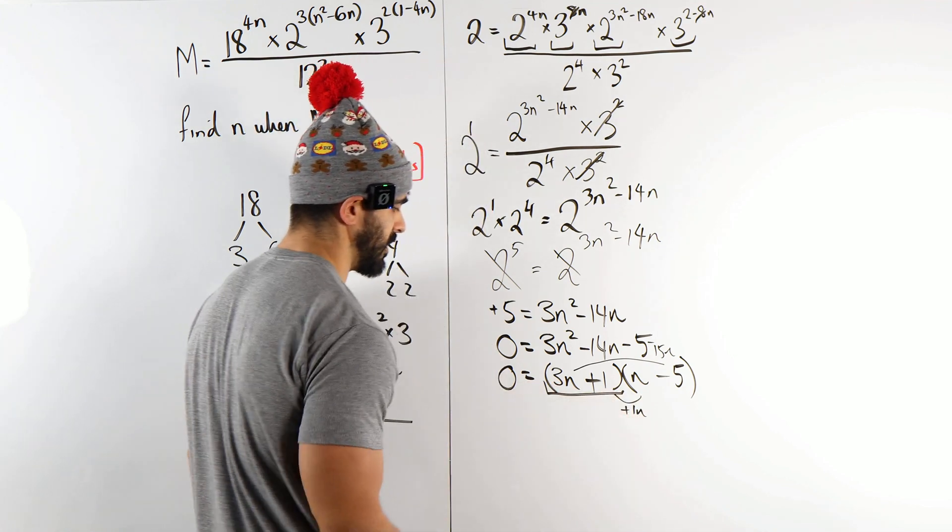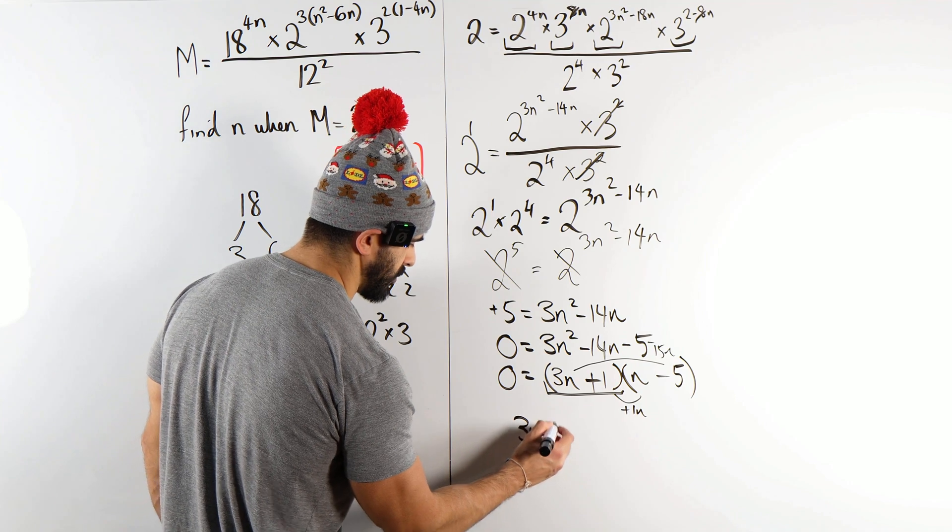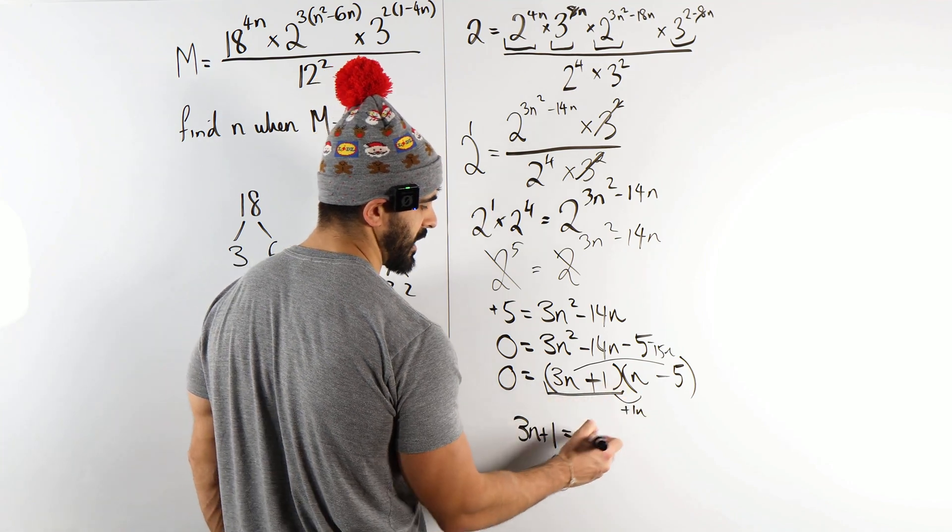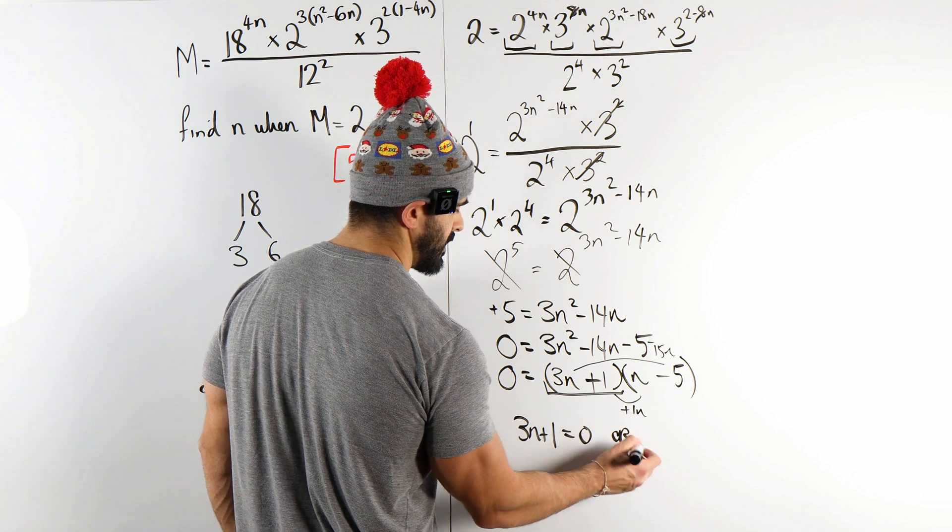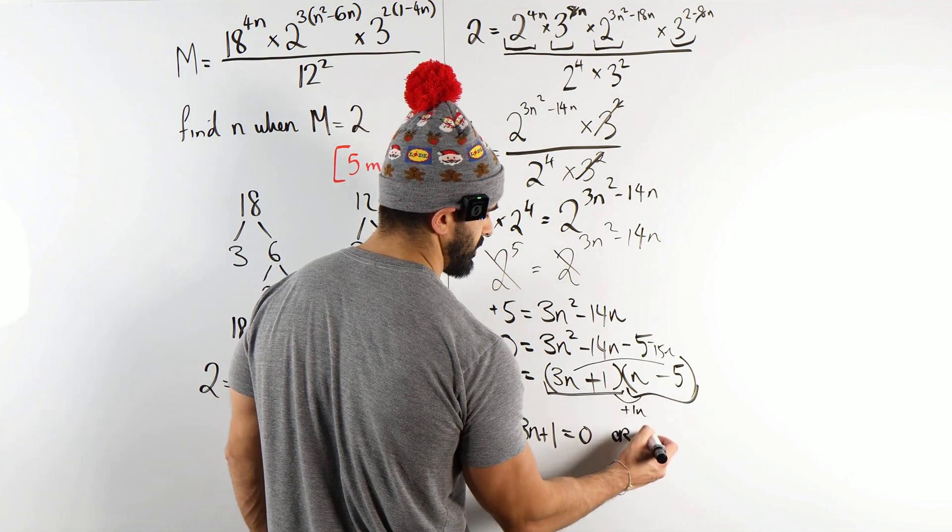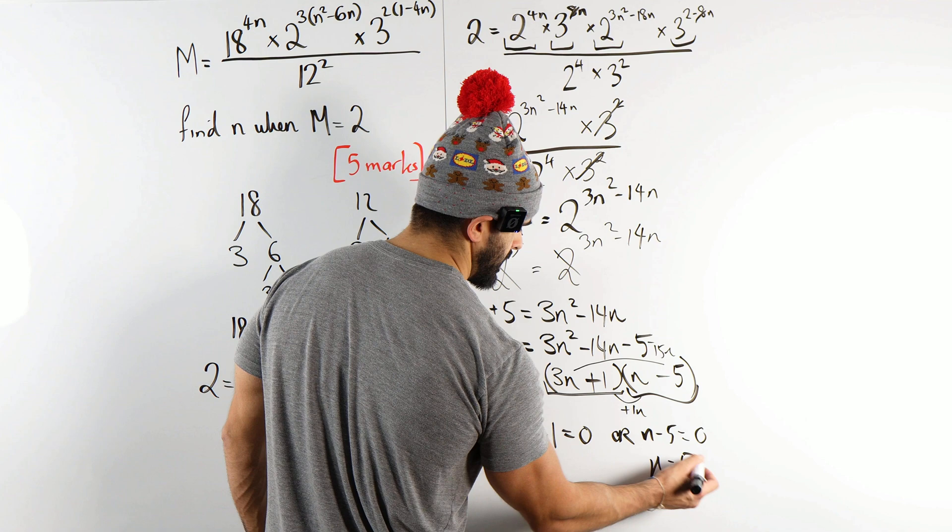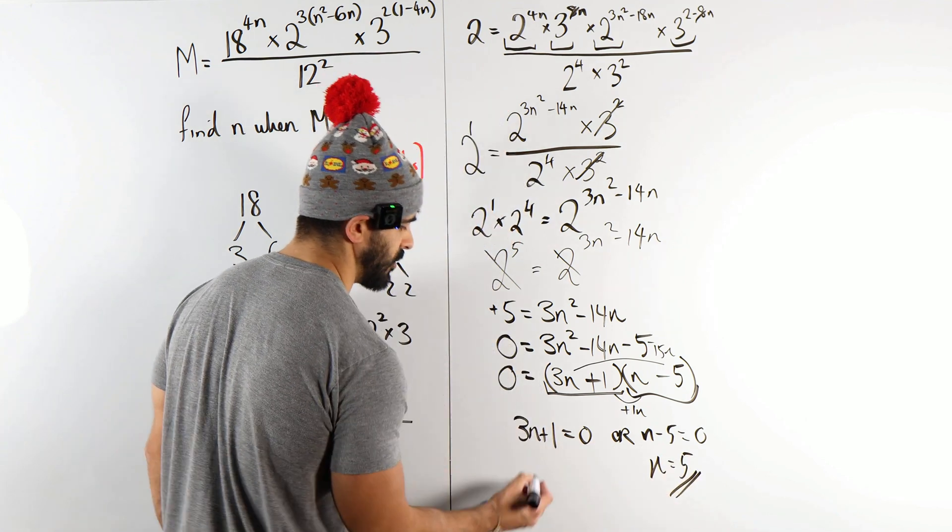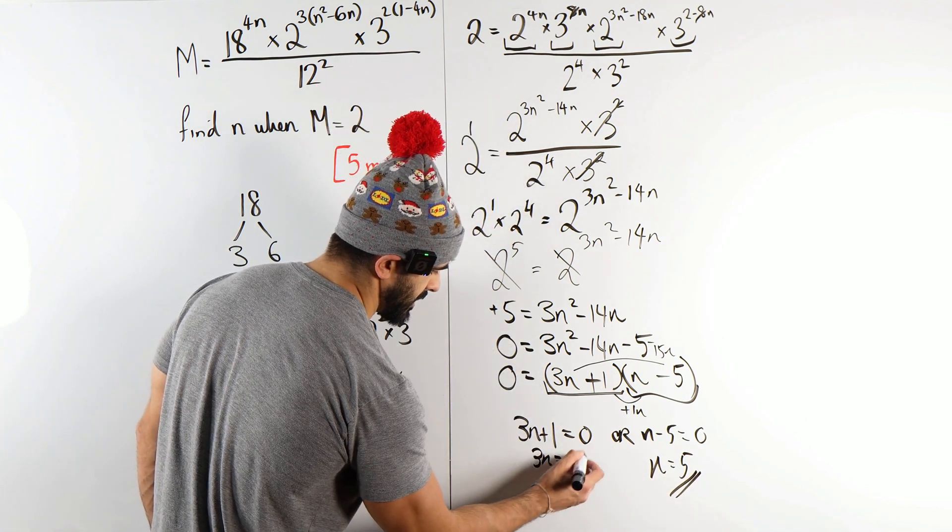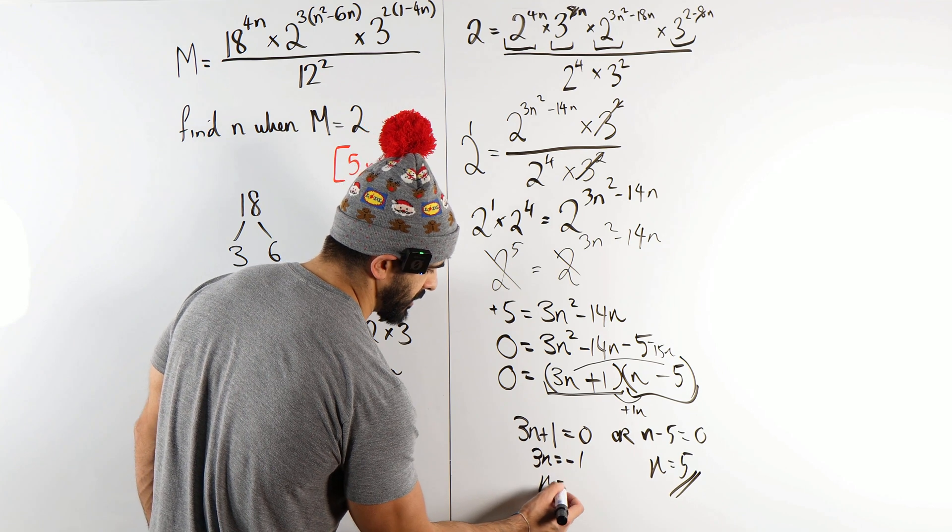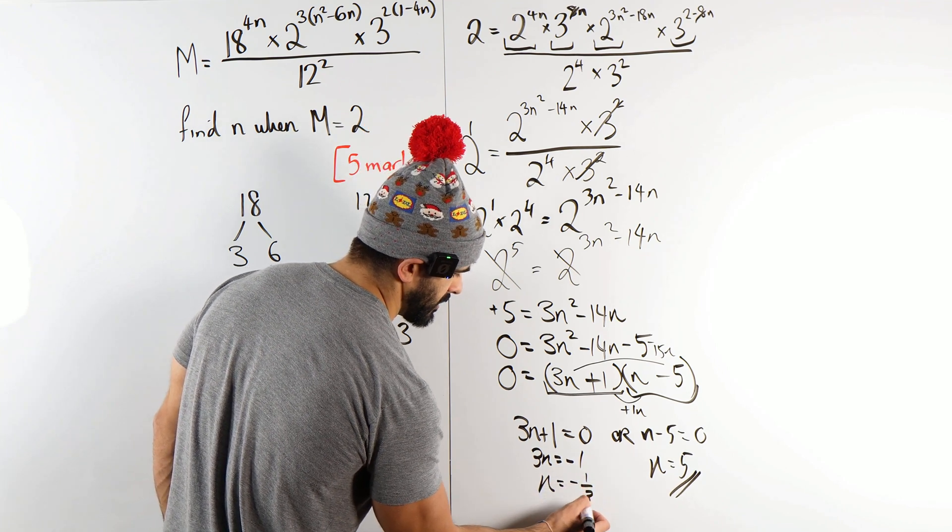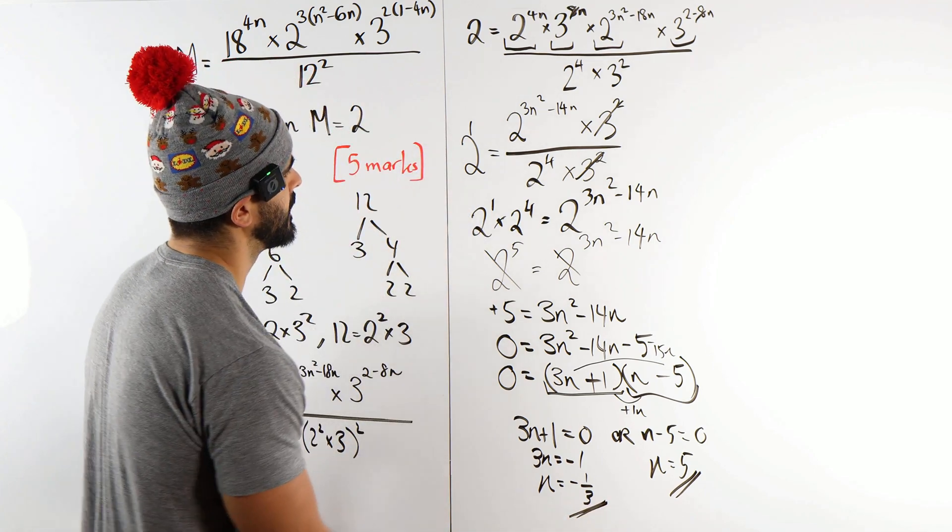3n plus 1 is 0. You have two brackets multiplying to give you 0. So one of them has to be 0. Or n minus 5 is 0. Add the 5 over, n is 5. Here you're going to minus the 1. So you get 3n is minus 1. And then you divide both sides by 3. You get minus 1 third. And that is our answer.